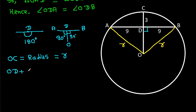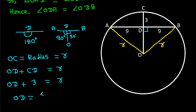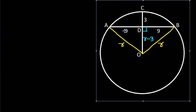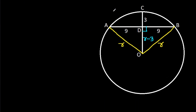Also, OC will be the radius, equal to R. And OC is OD plus CD, so OD plus CD equals R. Since CD is 3, OD will be R minus 3.